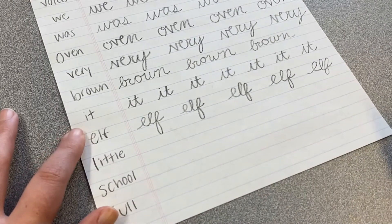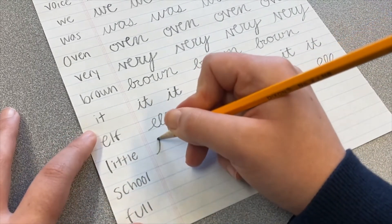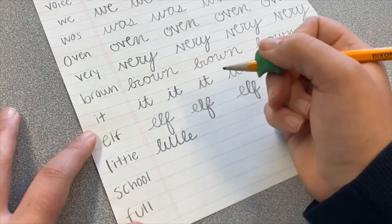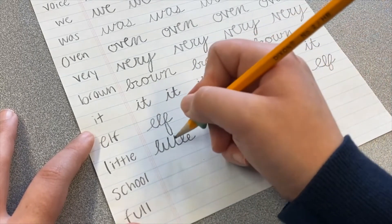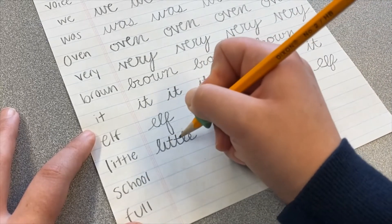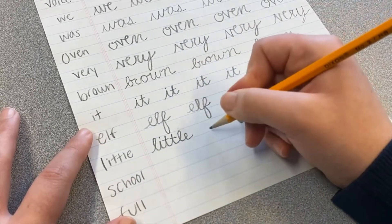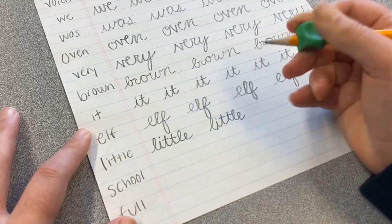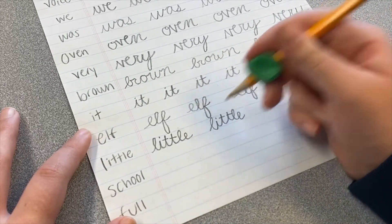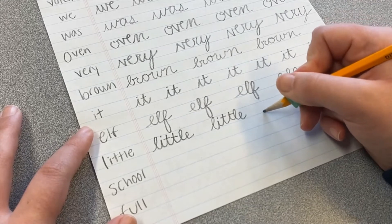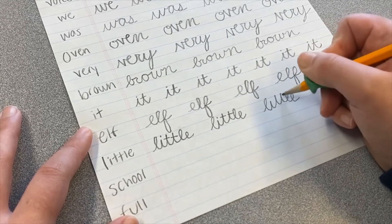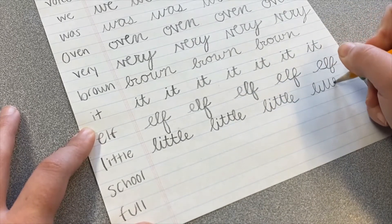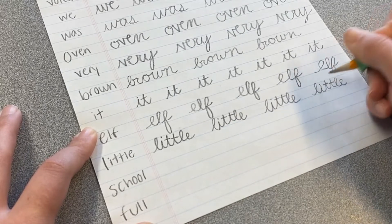Next up is the word little. L, I, T, T, L, E. And another one to make sure that you're really forming your letters well on. And then I dot, or cross the T's, T, T, then I dot the I. That's how I was taught when I was in school, to go backwards, to put on those dots and lines.